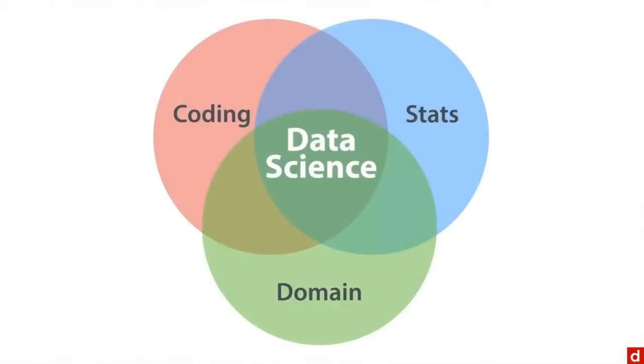Now, let's go back to our Venn diagram here. Because this is a Venn, we also have these intersections of two circles at a time. At the top is machine learning. At the bottom right is traditional research. And on the bottom left is what Drew Conway called the danger zone. Let me talk about each of these.